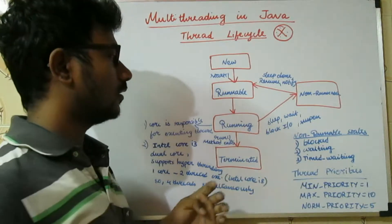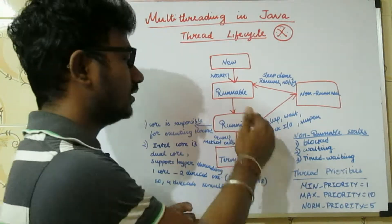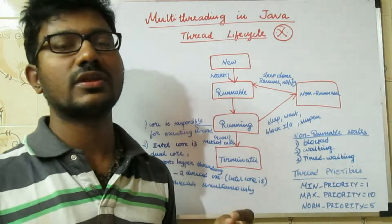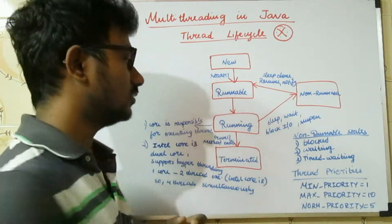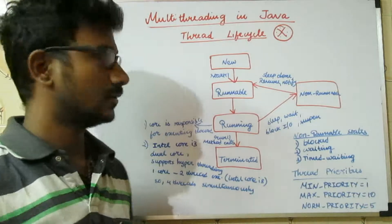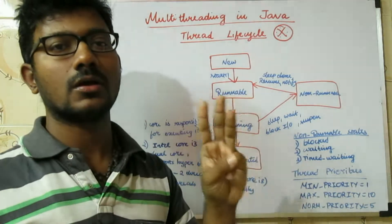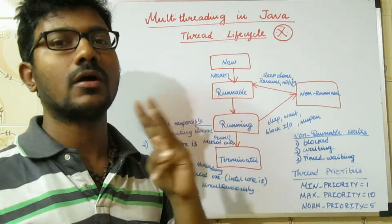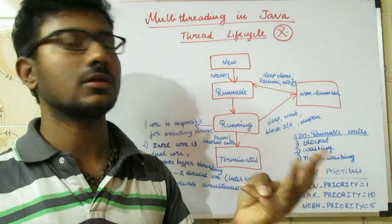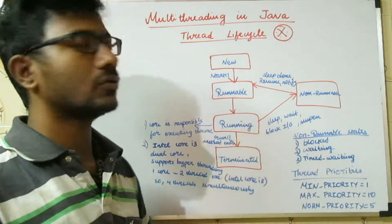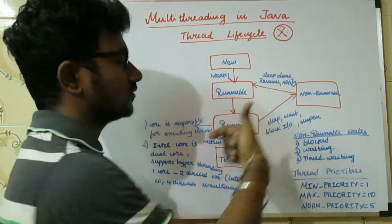If your father completes his drive and moves to the Terminated stage — meaning he doesn't need the bike for the next few days — then the remaining 3 members are still eligible for riding the bike. So the next highest priority thread gets the opportunity, and that thread moves from the Runnable to Running state.